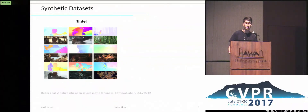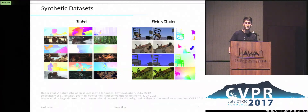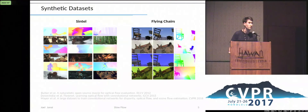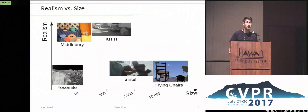Therefore, synthetic datasets were created to generate more data. The Sintel dataset was created with Blender from the animated short movie Sintel, and provides 1,000 examples of more complex scenes than the real datasets. For deep learning, the large-scale dataset Flying Chairs, consisting of 22,000 examples, was created by rendering 3D models of chairs in front of background images from Flickr. But for synthetic data, the question remains how well it represents the real world. In conclusion, the available datasets so far are either limited in size or realism, and what we really want is a real and diverse dataset with many examples.